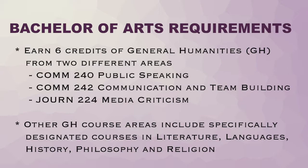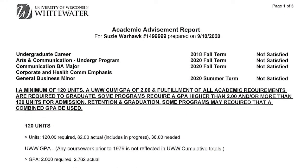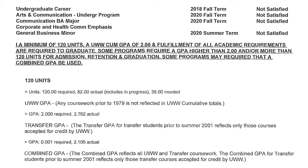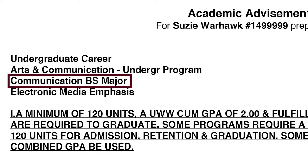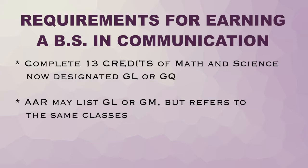Second, earn six credits of general humanities (GH) from two different areas. The Communication Department offers GH-designated courses that count towards some majors and minors, including COM 240 Public Speaking, COM 242 Communication and Team Building, and Journalism 224 Media Criticism. Other GH course areas include designated courses in literature, languages, history, philosophy, and religion. While the Bachelor of Arts is by far the most popular degree type in our department, the college also offers a Bachelor of Science, which requires you to complete 13 credits of math and science designated GL or GQ on your AAR.